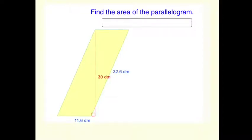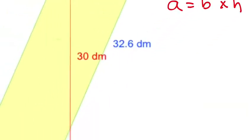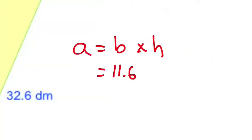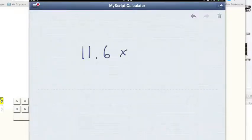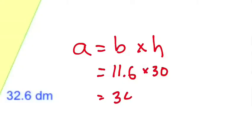Alright, so once again, to find the area of the parallelogram, we're going to use the formula area equals base times the height. And the base, in this case, is 11.6 decameters. And the height is 30 decameters.